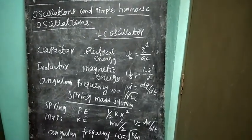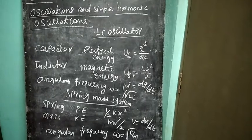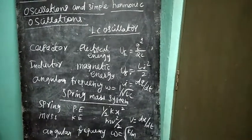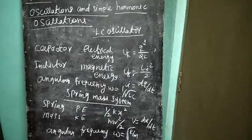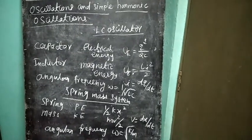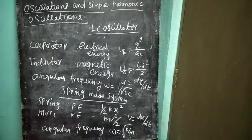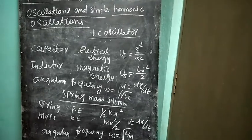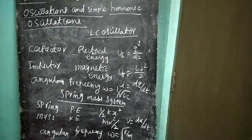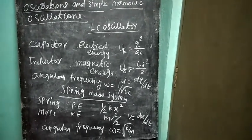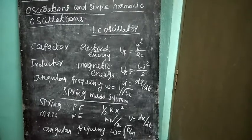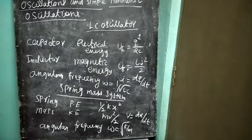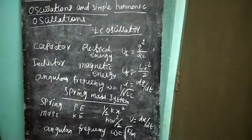Total mechanical energy equals the sum of potential energy and kinetic energy: half kx squared plus mv squared by 2. In LC oscillations, angular frequency omega equals 1 by root of LC. In the spring-mass system, angular frequency omega equals root of K by M.